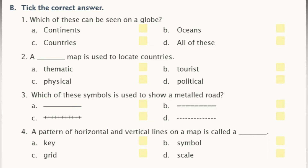Which of these symbols is used to show a metal road? Option A, option B, option C, or option D? Answer is option A. A pattern of horizontal and vertical lines on a map is called a dash — key, symbol, grade, or scale. Answer is grade.